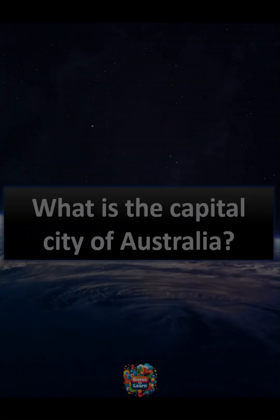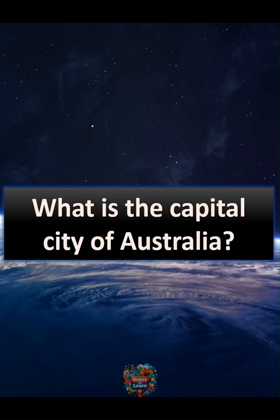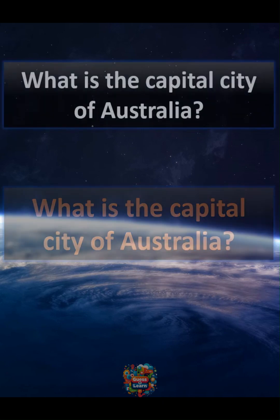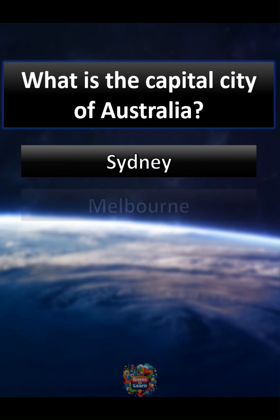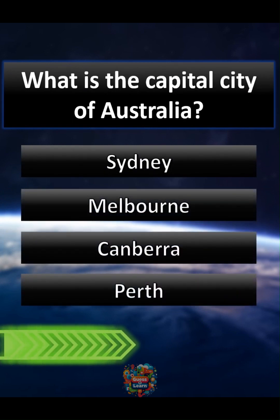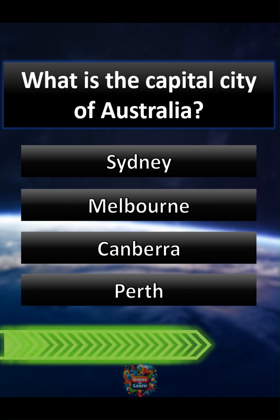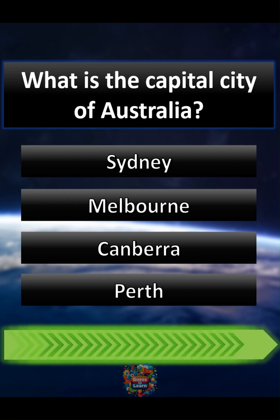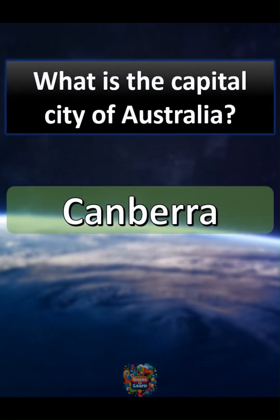What is the capital city of Australia? A Sydney, B Melbourne, C Canberra, D Perth. Correct answer: C Canberra.